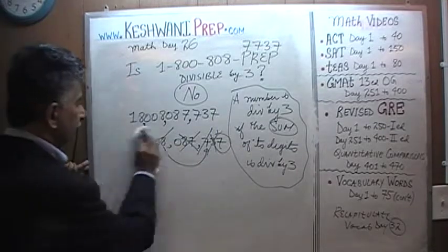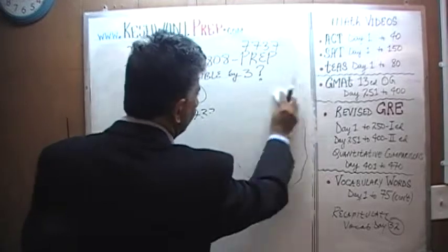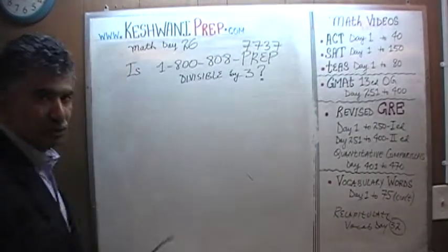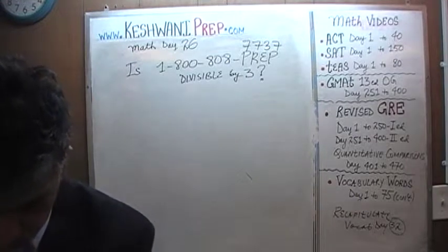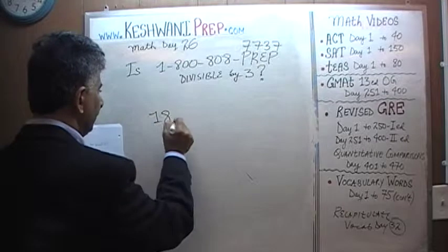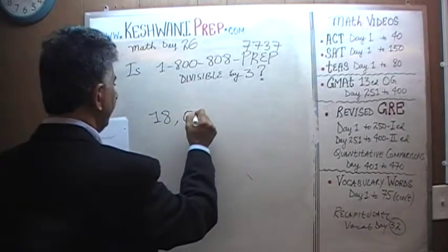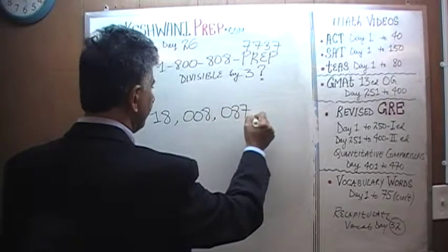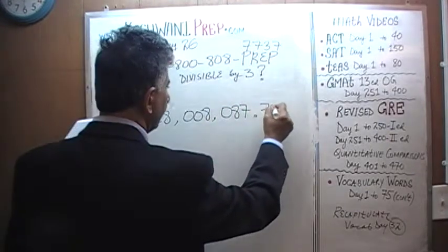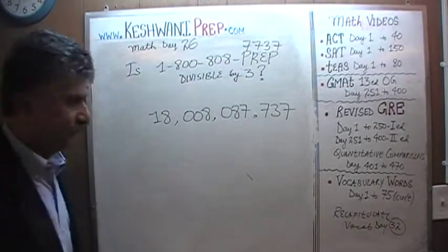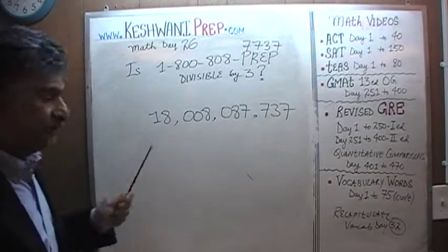Let's see how to divide it. How do we divide a large number like that without actually doing the long division? Without actually doing the long division, let's find out. 18 billion 8 million 87 thousand 737. Let's begin the process, shall we?